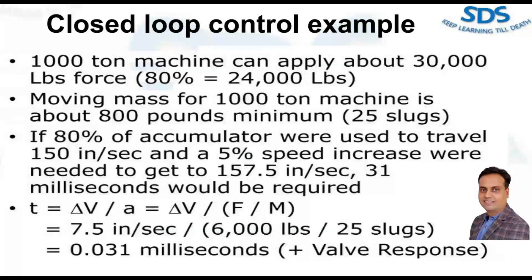To calculate the time required for the speed increase, we can use the formula as you can see on the slide. In this case, the velocity change delta-v is 7.5 inches per second, which is the difference between the target speed and the actual speed. By substituting values into the formula, we can calculate the time required.